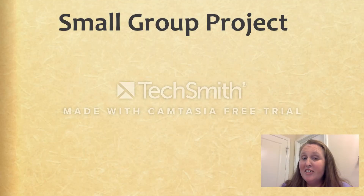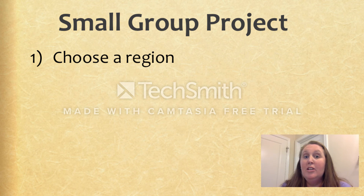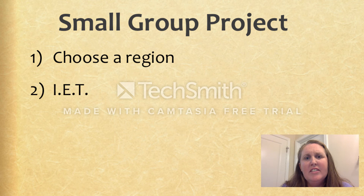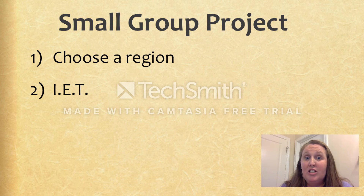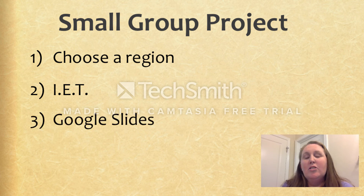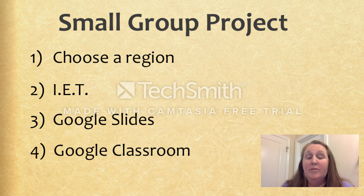Now it's your turn. In your small group, I would like for you to choose a region — you just can't choose the Coastal Zone. Use your interactive essential text to research the climate, the physical features, and the natural resources of the region you chose. Use Google Slides to create a little presentation, kind of like what I did, of the three characteristics of your region. Then upload your assignment to Google Classroom. I can't wait to see what you come up with, guys.